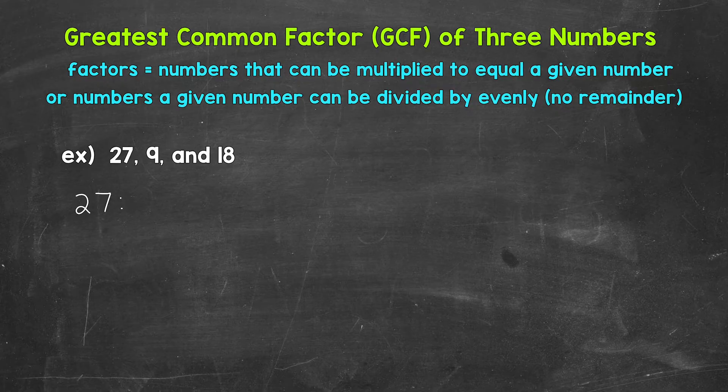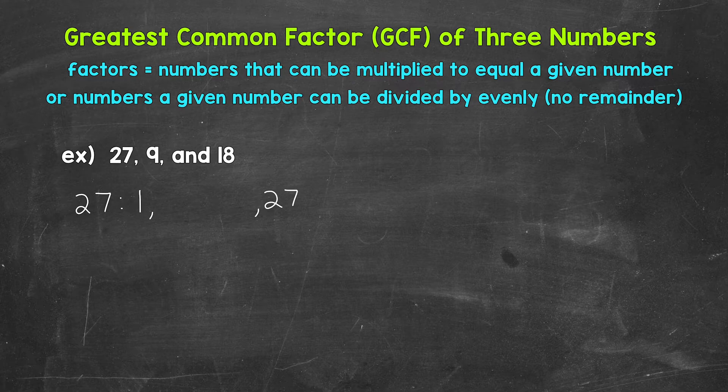So I'm going to write 1 and 27 with a gap in between for the other factors. That way, we can write the factors in order. Now we need to list the other factors of 27. So let's think about what else goes into 27, so to speak.